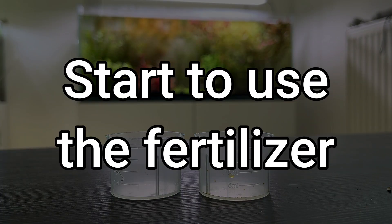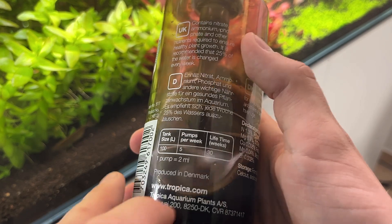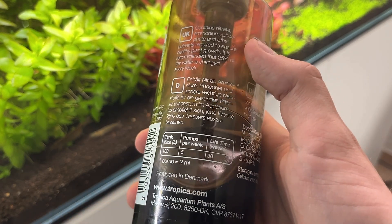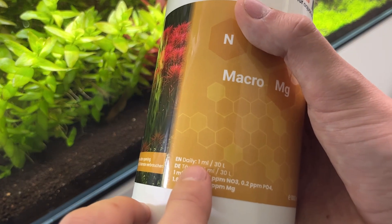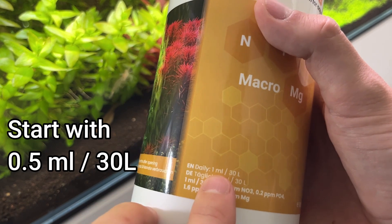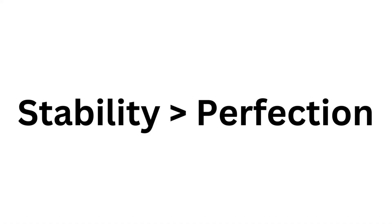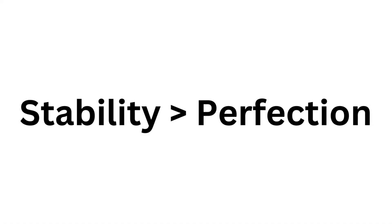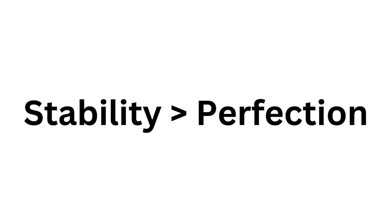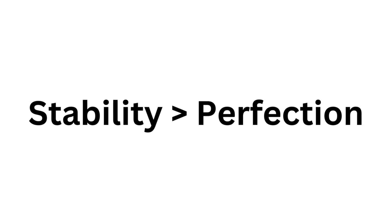For the third step, starting to use the fertilizer: just rely on what is recommended on the bottle for the start, since the manufacturer probably ran a lot of tests to find this recommendation. So when it is time to start fertilizing after a few weeks, start with 50% of the recommendation, and then work your way up to the recommended amount over the course of a few weeks. One thing I learned about aquariums is that stability is almost always better than perfection.